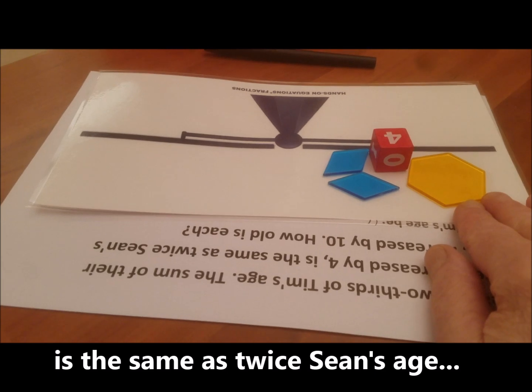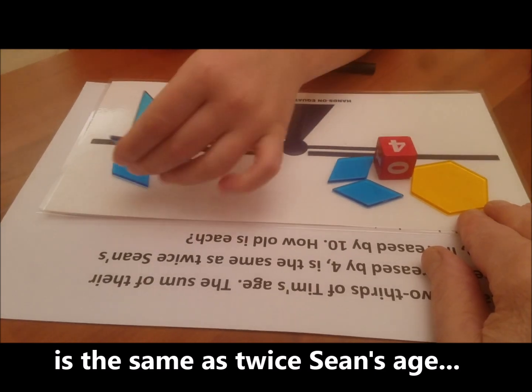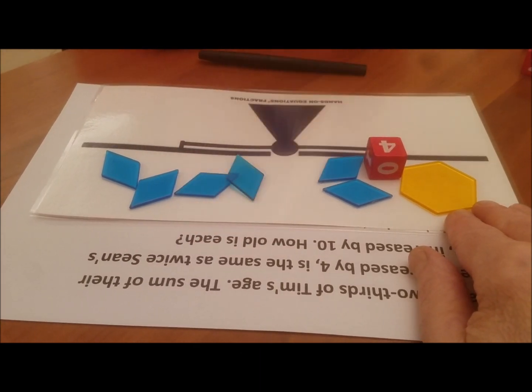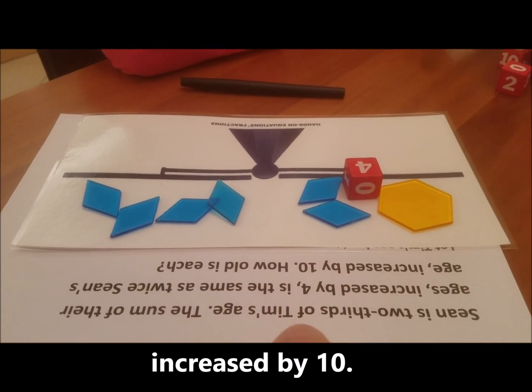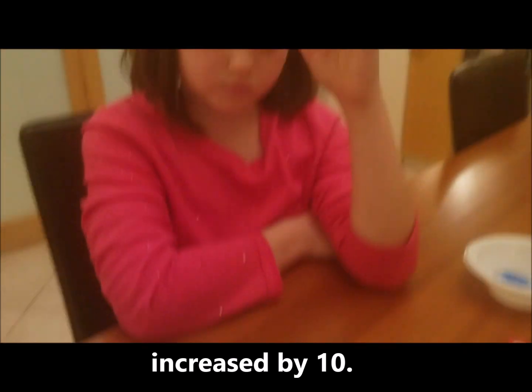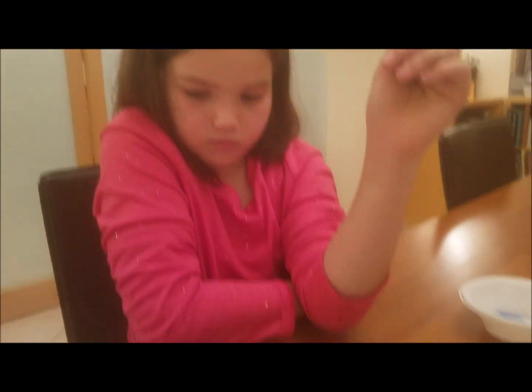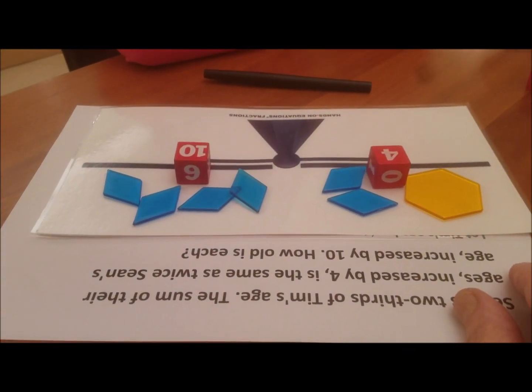What would be twice Sean's age? Four. Four of the blue blocks increased by ten. Increased by ten. So, Yuska, now that we have the setup for this problem, we're ready to try to solve.